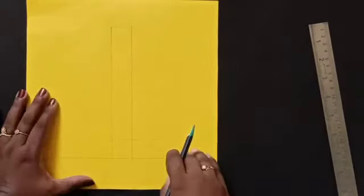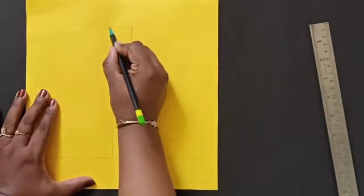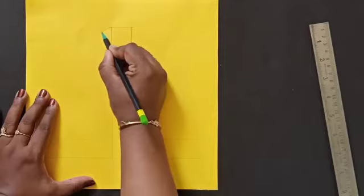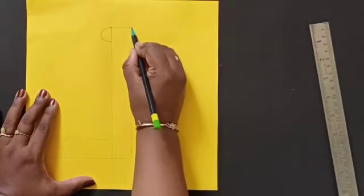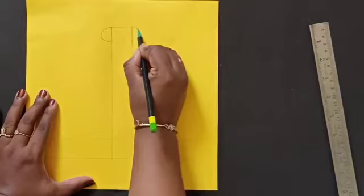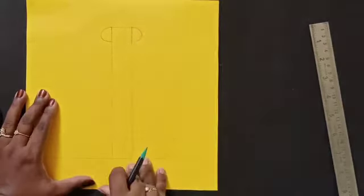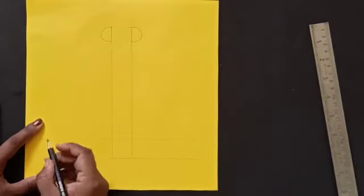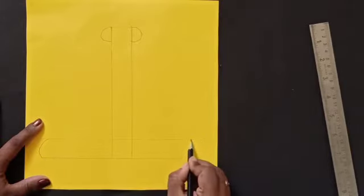Now we will make a curved line from the top till the dash that we have made. From here also we will make a semicircle like this. And down here also, we will make a semicircle like this.